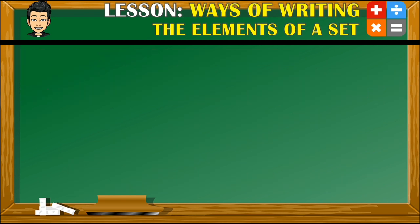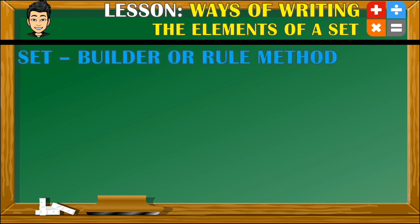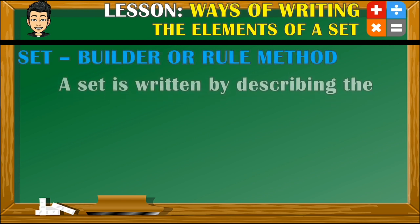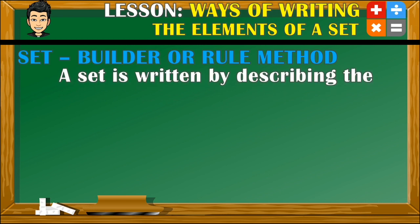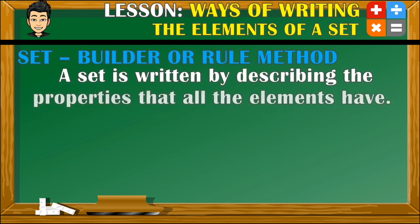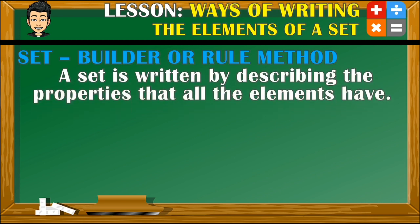The second method in writing the elements of a set is what we call the set builder or rule method. In this method, a set is written by describing the properties that all the elements have.